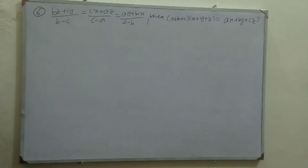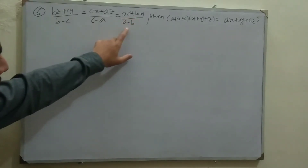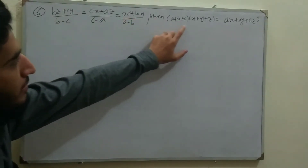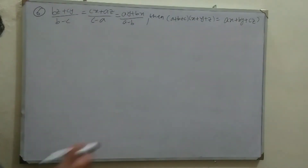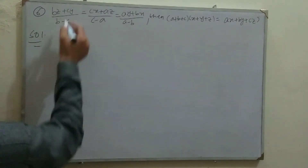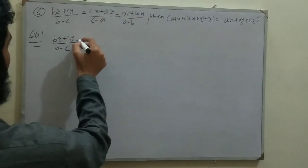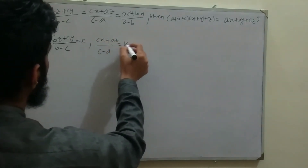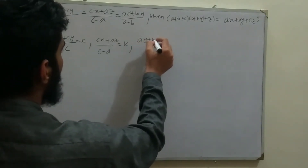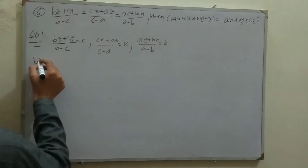Moving to Question 6 of Exercise 3.4. Question 6 states: if (bz+cy)/(b−c) = (cx+az)/(c−a) = (ay+bx)/(a−b), then prove that (a+b+c)(x+y+z) = ax+by+cz. Using the K theorem, let each fraction equal k: bz+cy = k(b−c), cx+az = k(c−a), and ay+bx = k(a−b).